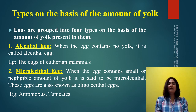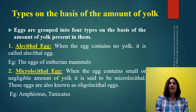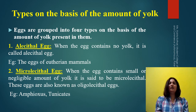The best example is eutherian mammals, which are also known as placental mammals. Because they have a placenta through which nourishment can be provided to the developing embryo, they do not actually require yolk. Now the second type is the microlecithal type of eggs, where 'micro' means small amount and 'lecithal' means yolk.